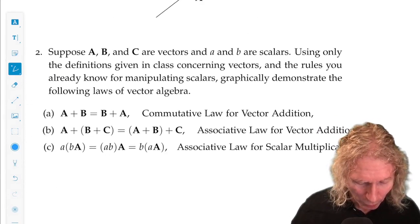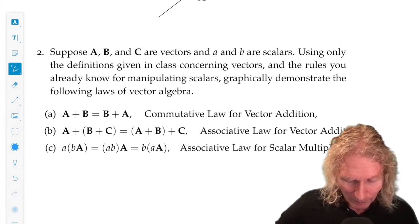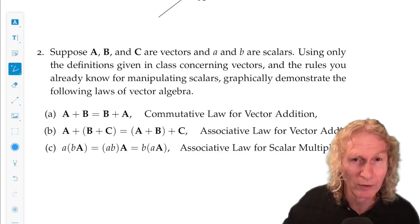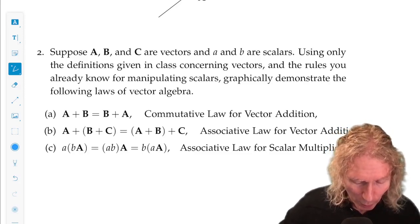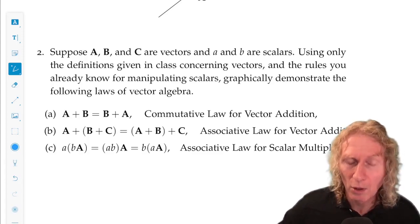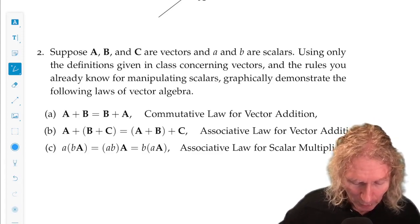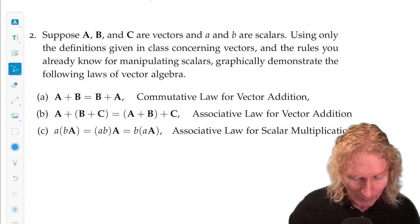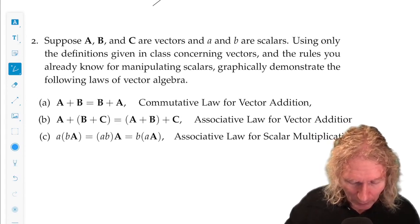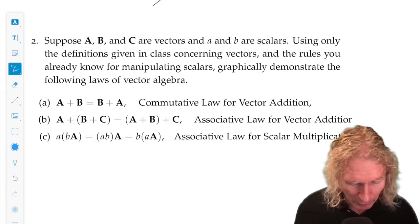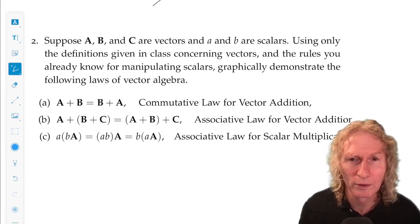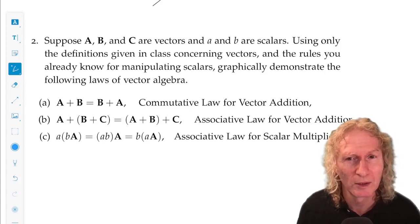Problem two is take any three vectors, not the same ones above, these are just general vectors, and prove these laws: commutative addition, that's essentially the parallelogram construction we've already done, associative law for vector addition and associative law for scalar multiplication using just the graphical construction for addition and scalar multiplication.